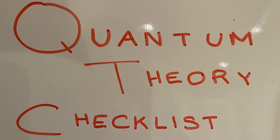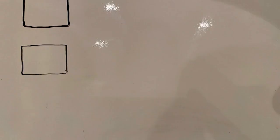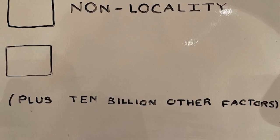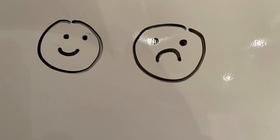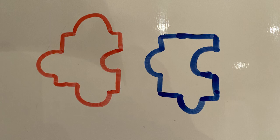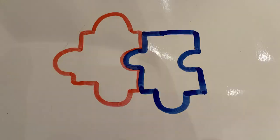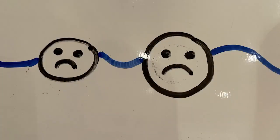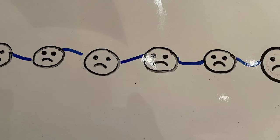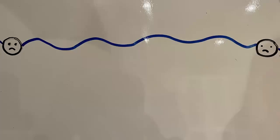First things first: in order for a quantum interpretation to even be considered, it has to first address non-locality — the ability of objects to somehow know about another state, even when billions of light years apart. But it is explained well using this theory. The path of the particle along a pilot wave depends on the state of other particles along the same wave function, and this particular wave function spans the entire universe.